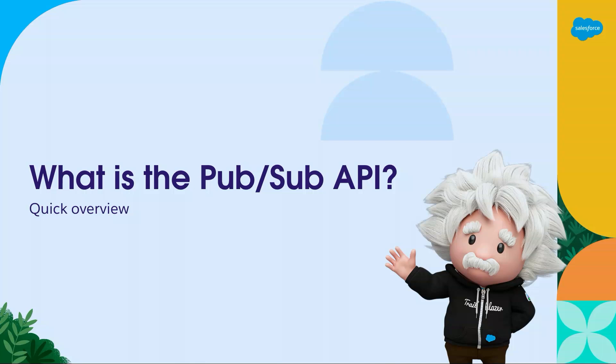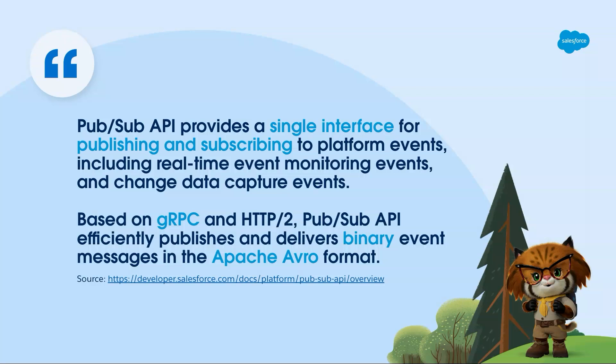So what is the PubSub API? There's a quick overview to build into how to use managed subscriptions. You can go to developer.salesforce.com to read about it. The key points: it's a single interface — you publish and subscribe to platform events and real-time event monitoring events. It's gRPC, which the streaming API is not, and it delivers binary events in Apache Avro format. There are some real key differences between PubSub API and streaming API.